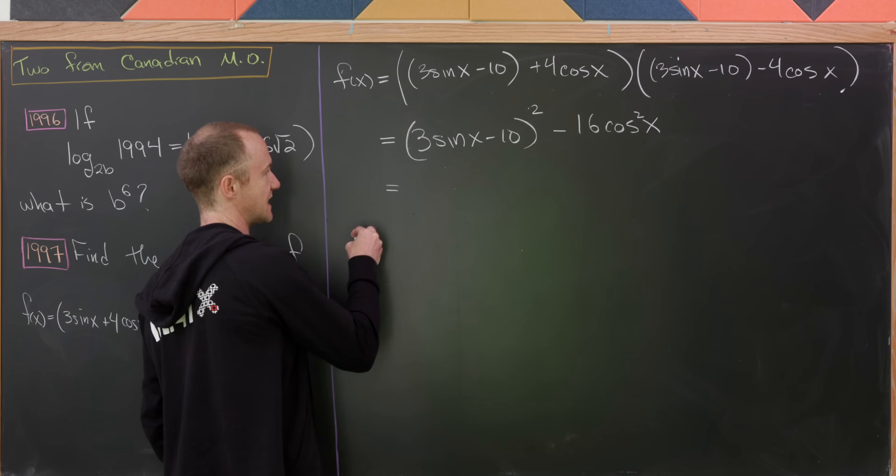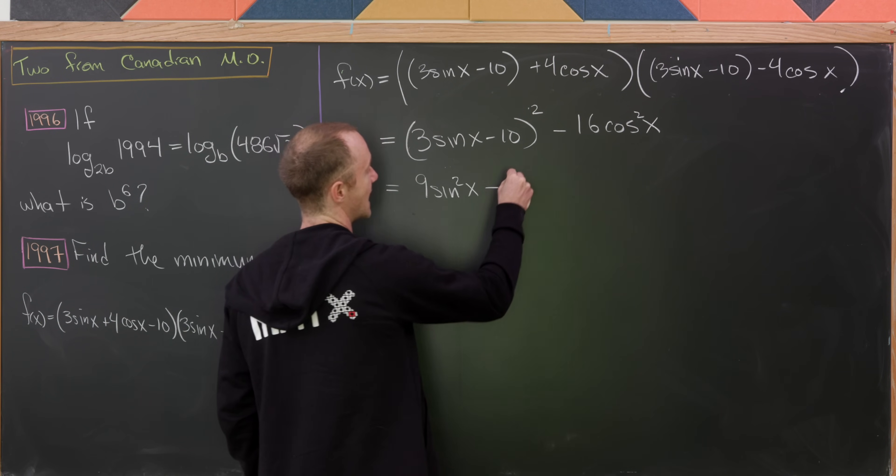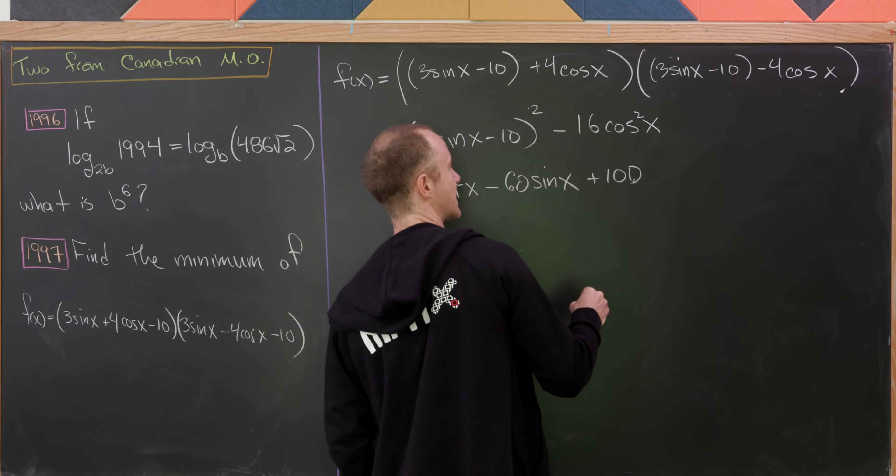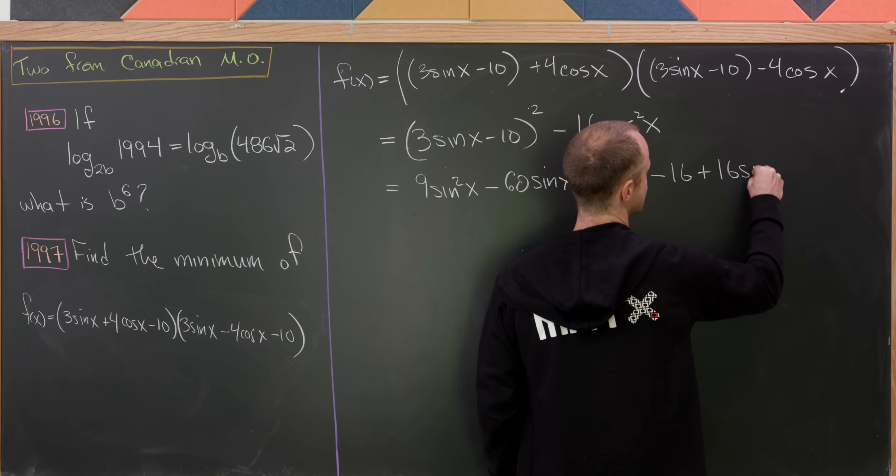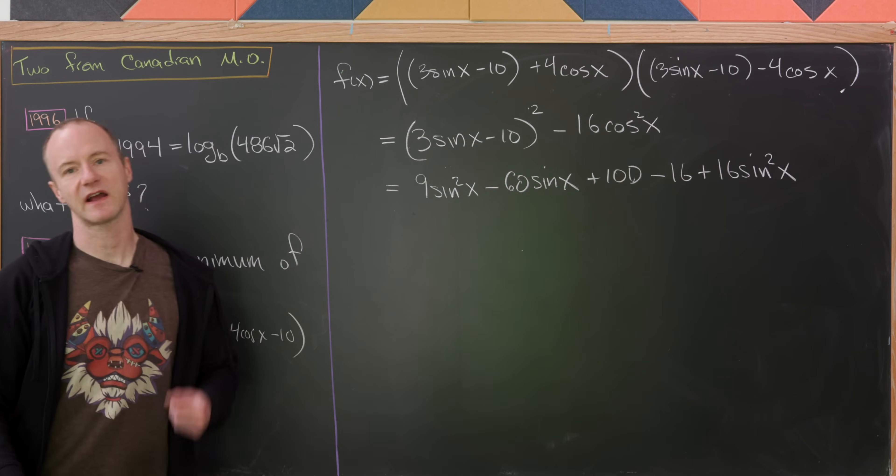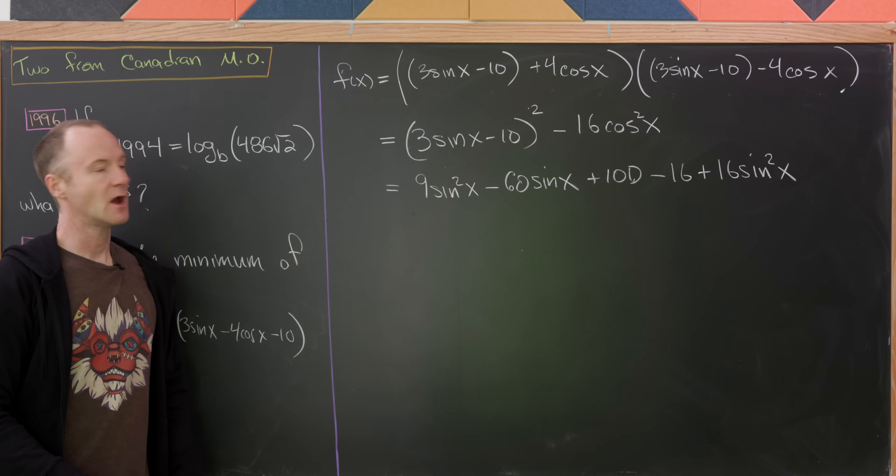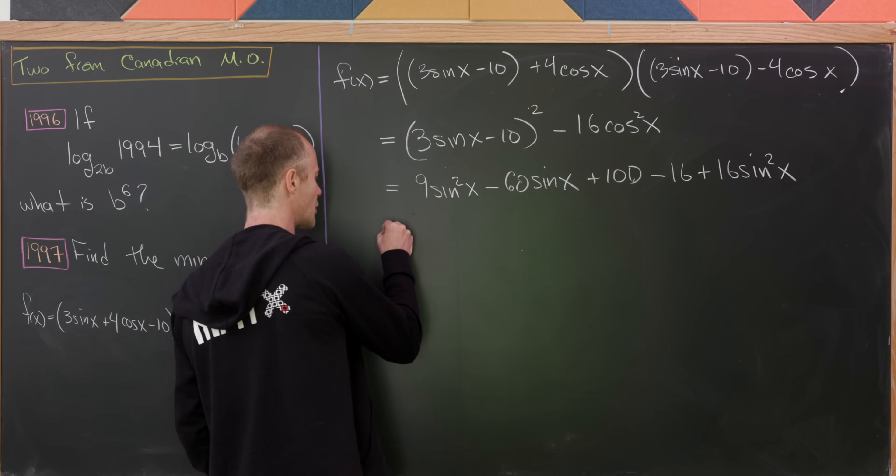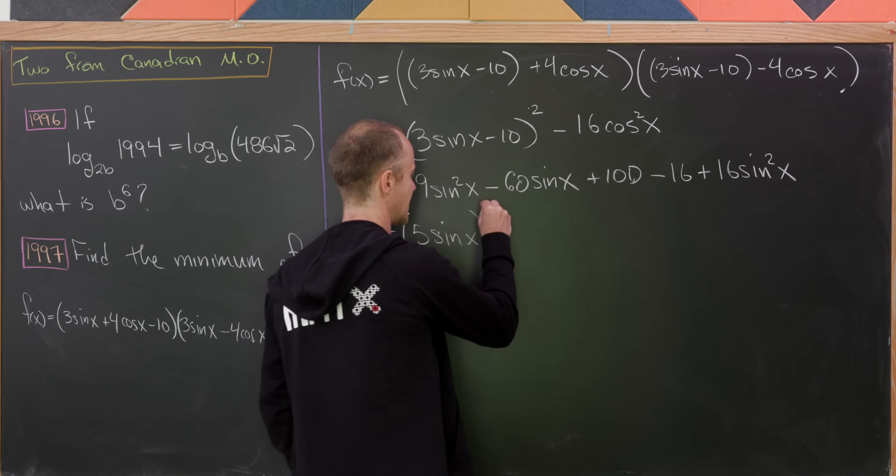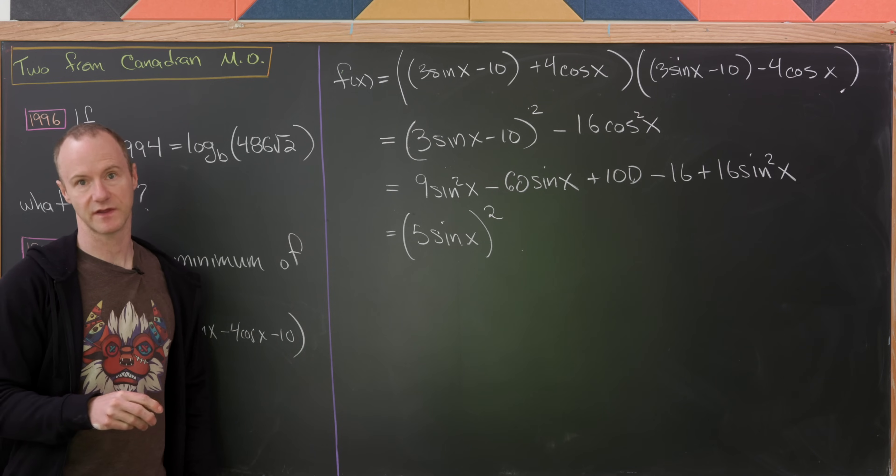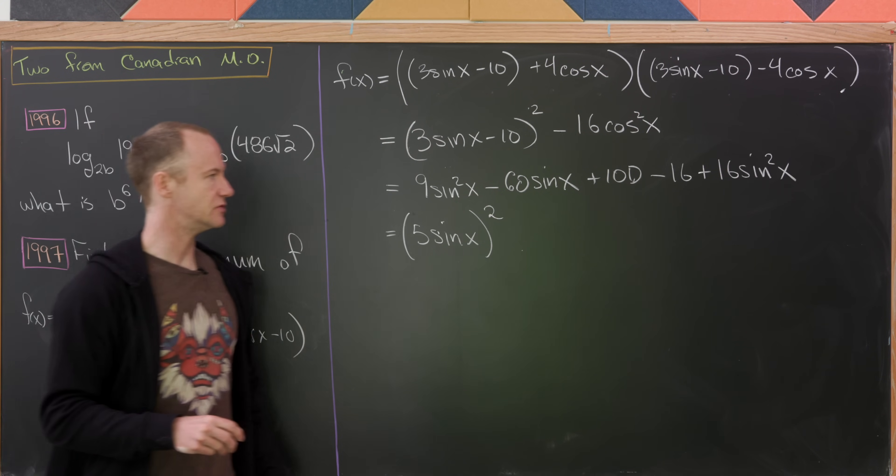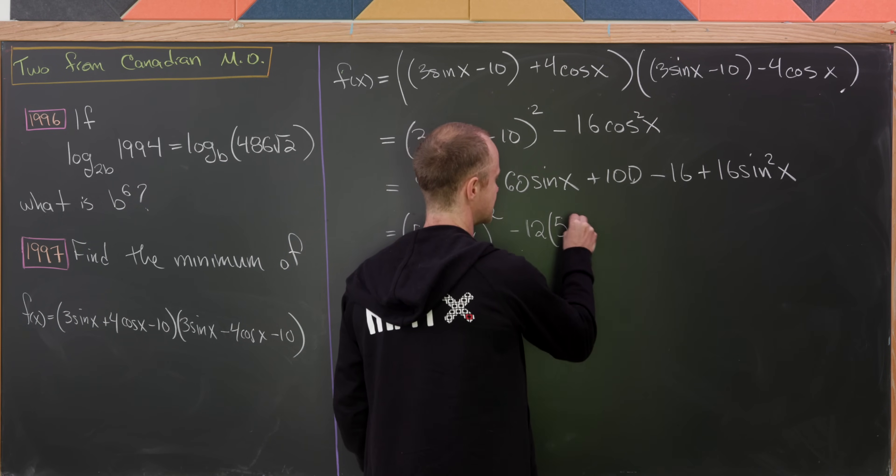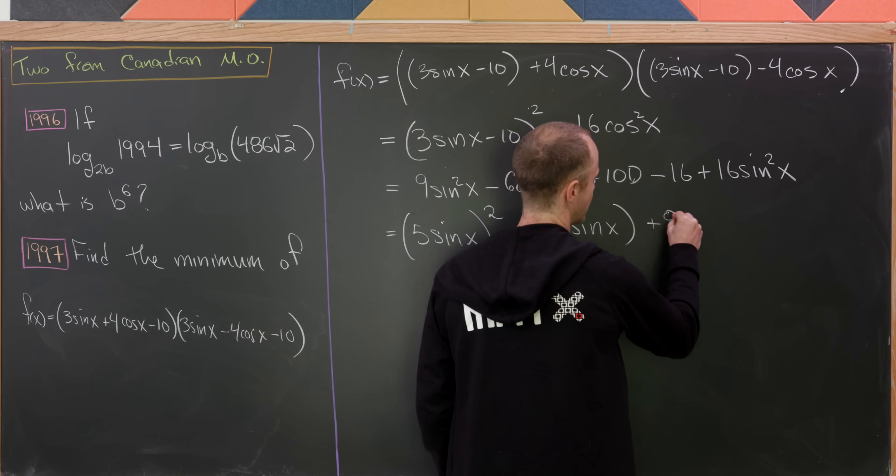And now what we'll do is multiply this out. So that's going to give us 9 sine squared x minus 60 sine x, and then plus 100. And then next up, we're going to have minus 16 plus 16 sine squared x. There, I used the fact that cosine squared is 1 minus sine squared. So now let's combine terms. We'll have 9 sine squared plus 16 sine squared. That's going to be 25 sine squared. But I'm going to go ahead and write that as 5 times sine of x squared. And then next up, we'll bring a 5 and combine it with the sine, leaving us with minus 12 times 5 sine of x. And then of course, now we're going to have plus 84.